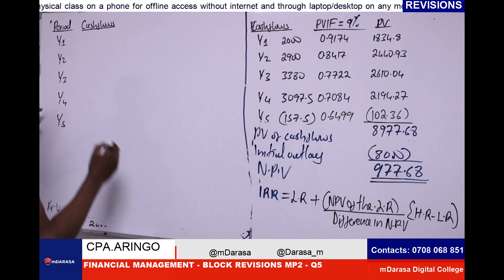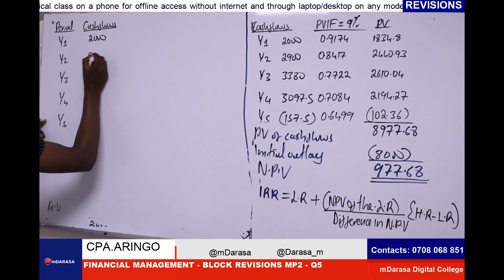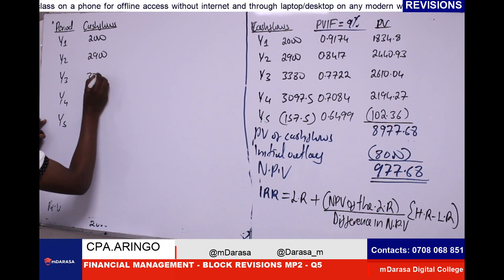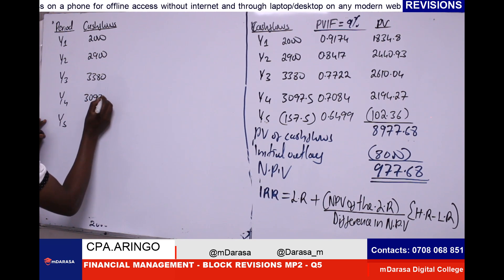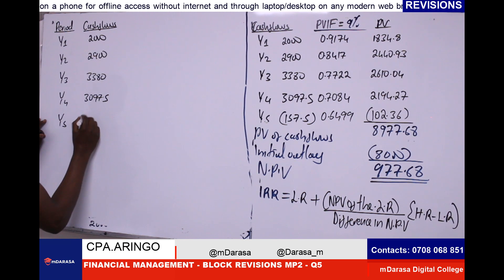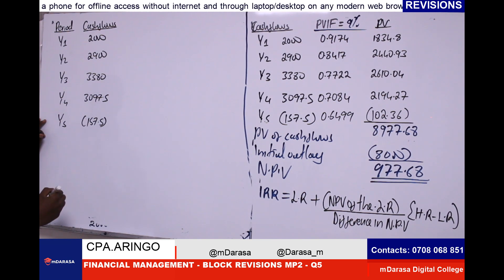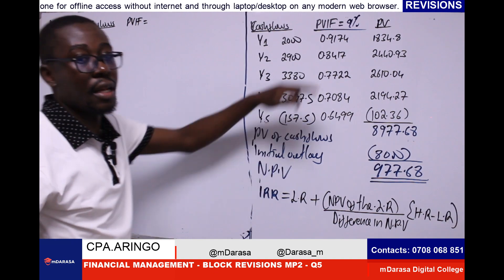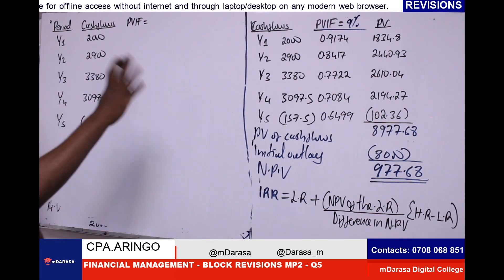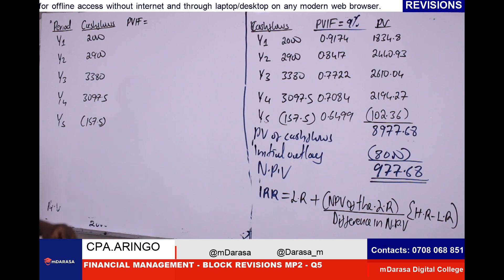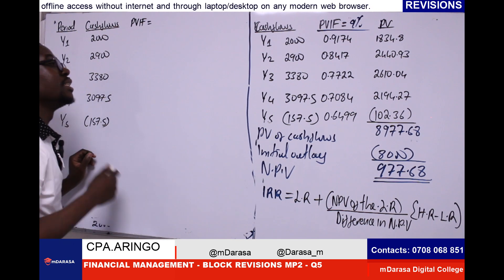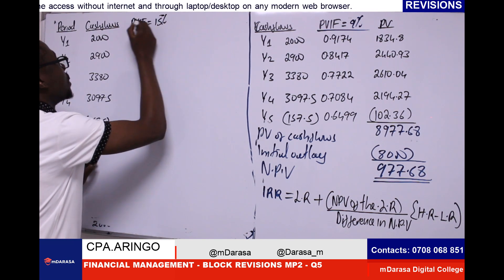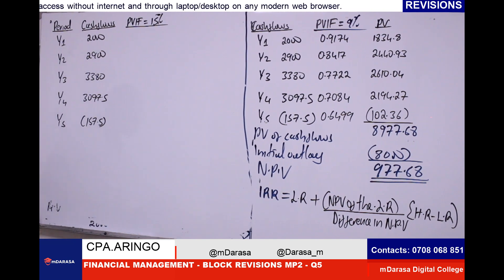We had cash flows of 2,000; 2,900; 3,380; 1,387.5; and negative 157.5. For the present value interest factor, we take any rate that is above 9%. We could take 10, 20, or 15 — any rate above 9%. So assuming we take 15%.